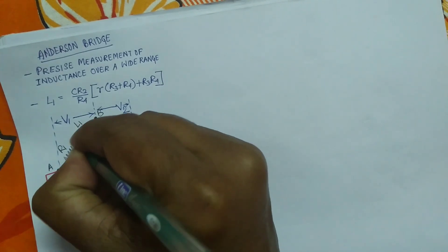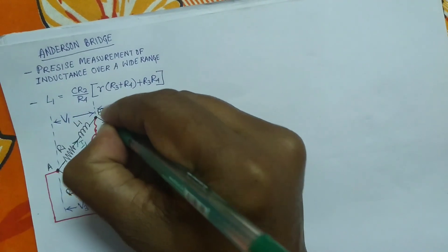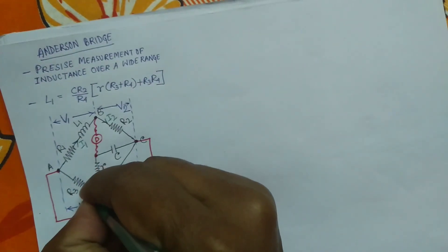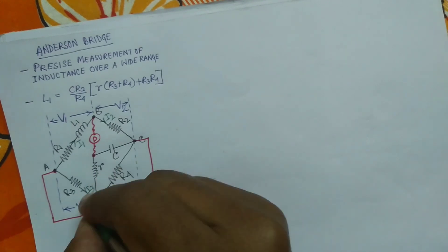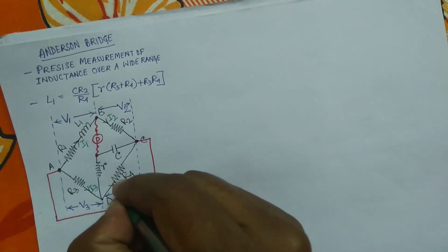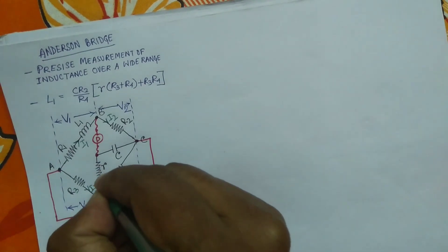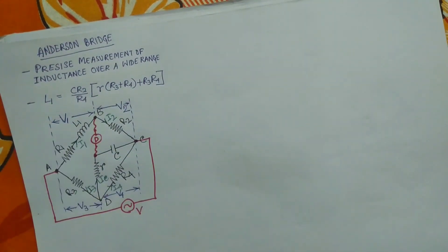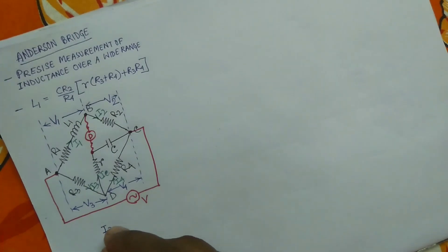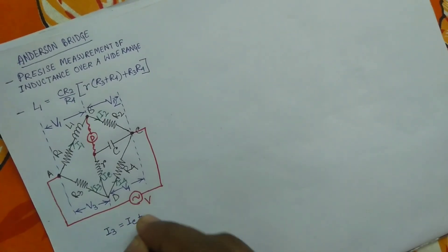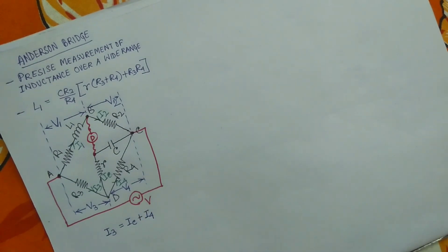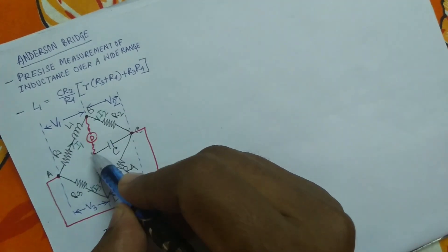The current flowing through the circuit: through arm AB it is I1, through arm BC it is I2, through arm AD it is I3. This I3 is divided into two parts: Ic (through the capacitor) and I4, so I3 equals Ic plus I4. At the balance condition, the potential difference across the two detector points remains the same.